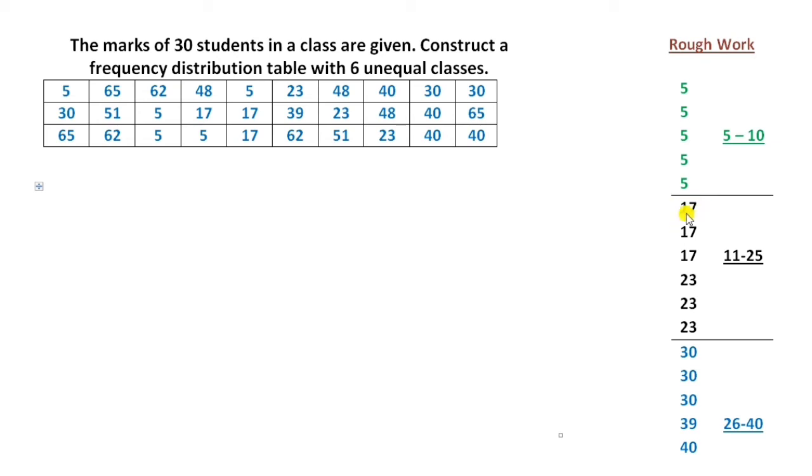Now the next group is 11 to 25. My last number is 23, so I will put a line again after my last number. Similarly, all the groups have been demarcated with the help of lines.